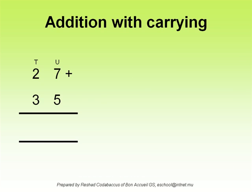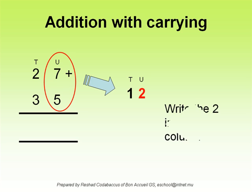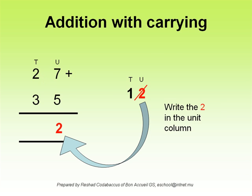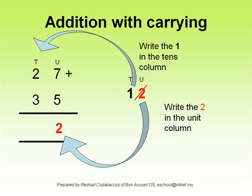In an addition with carrying, add the unit column and write your answer by the side. Take the unit from this sum and write it under the unit column. Write the remaining 10 digit on top of the tens column. Now add all the 3 numbers in the tens column to get your final answer.